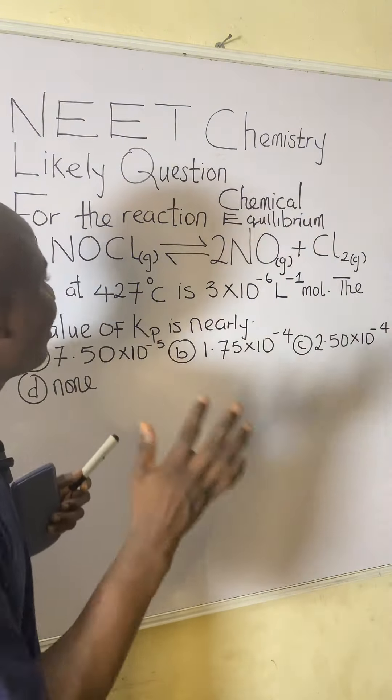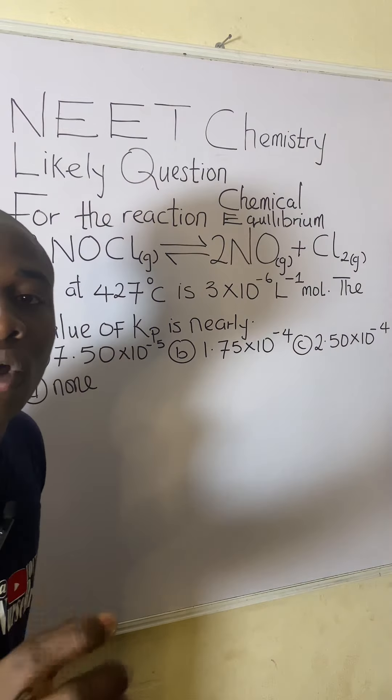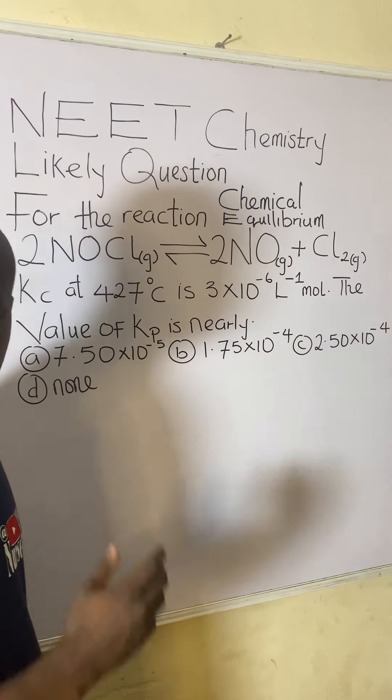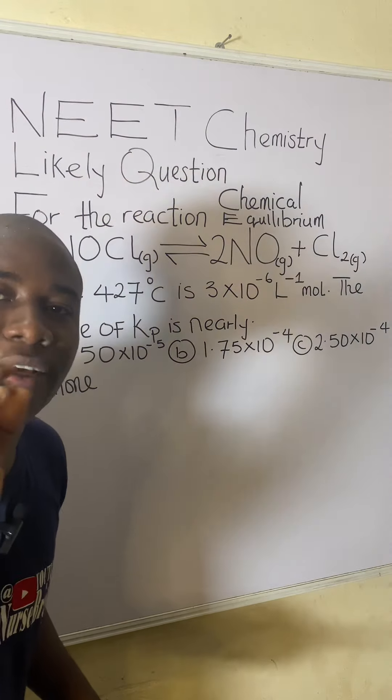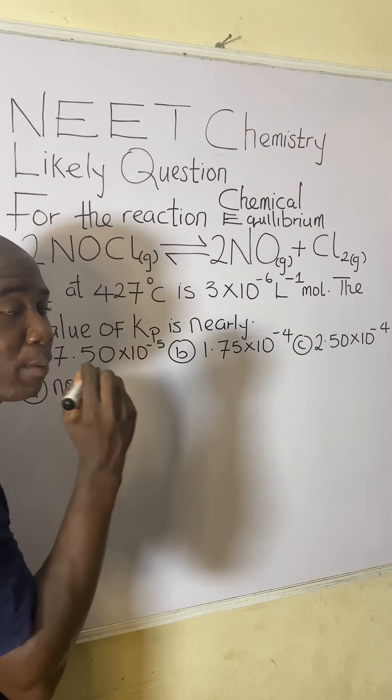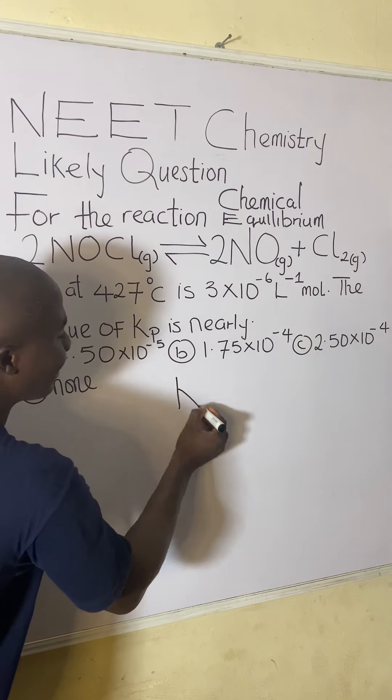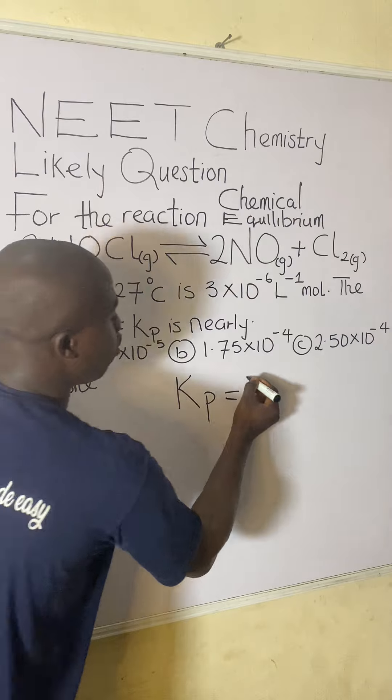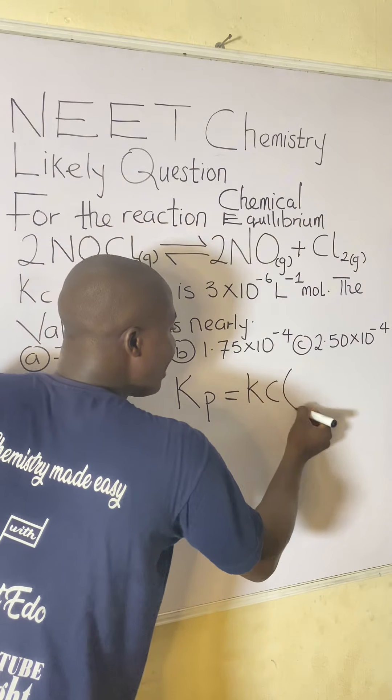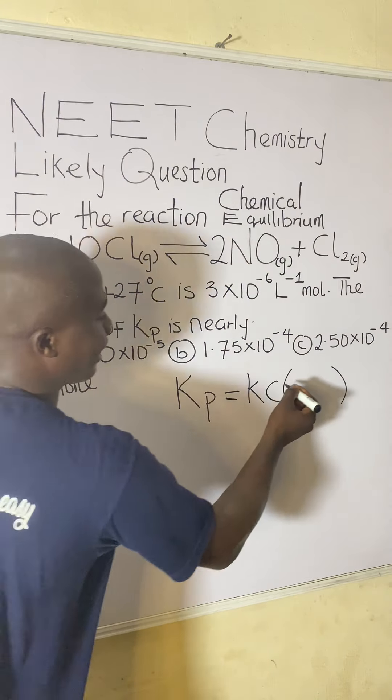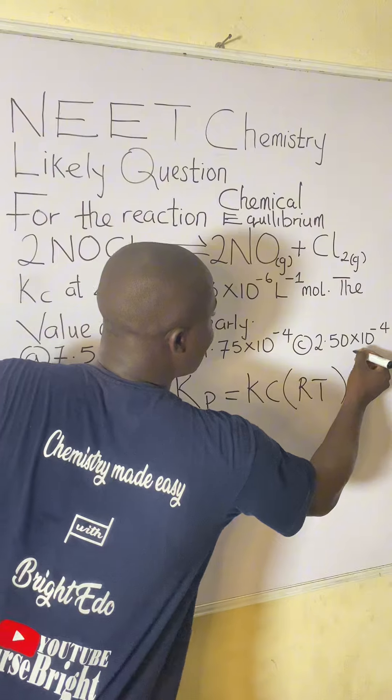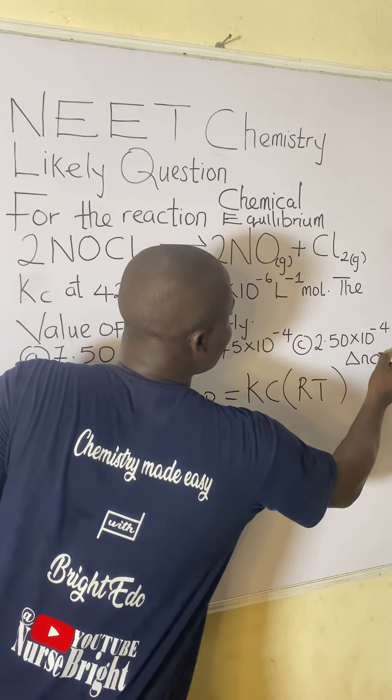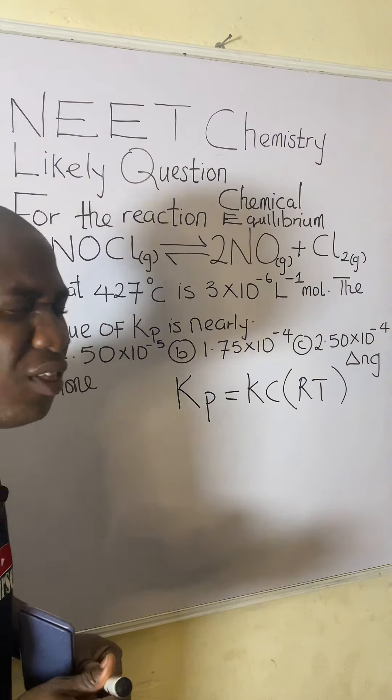It's very easy. So me looking at all of this parameter, I already know the formula to apply to solve questions under this aspect. And the formula is simply this. I'm writing on the board and it is Kp is equal to Kc into bracket, close bracket,